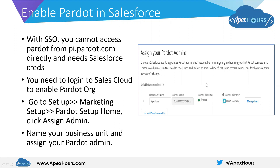Once you do that, you will be redirected to this screen. Here you need to add the name of your business unit and your business unit admin. As soon as you enter these two things and save, a new Pardot org will be created for you. It will directly be connected with Sales Cloud, and the Sales Cloud connector of Pardot will be in the paused state.